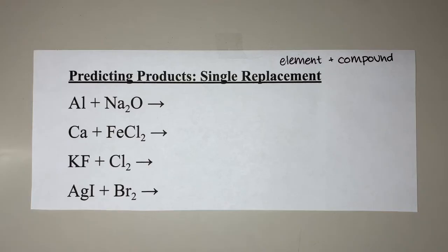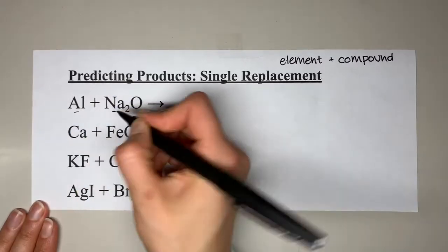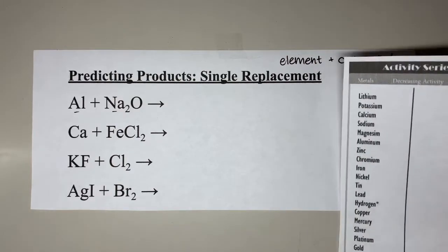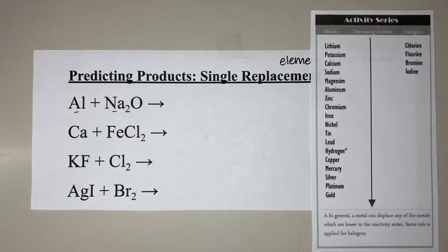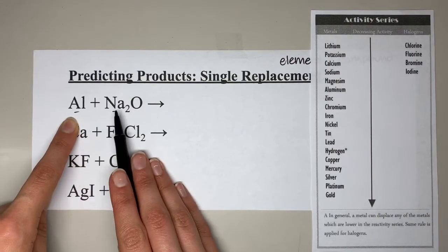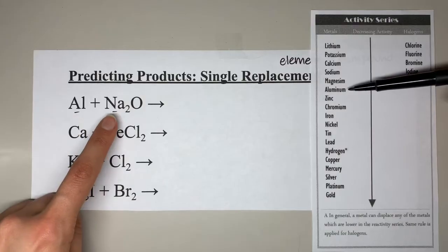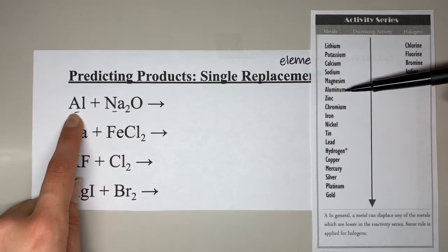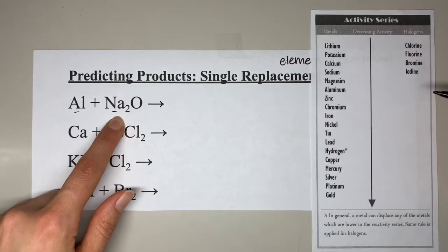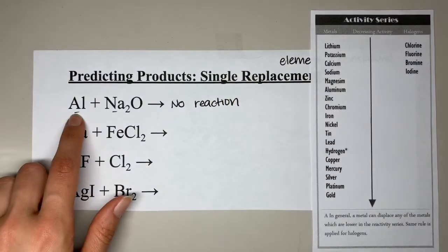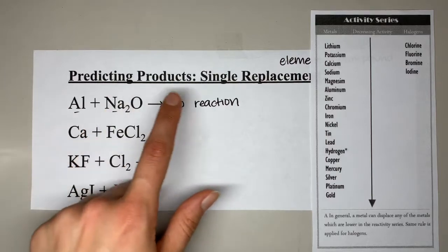Now let's start predicting the products. The first thing we ask is whether there are two metals or two halogens in the reactants. In this case, aluminum and sodium are both metals. We refer to the activity series on the metal side. We want aluminum to be higher than sodium in order for the reaction to take place. Aluminum is not higher than sodium, so this is no reaction — aluminum is not reactive enough to replace the sodium.